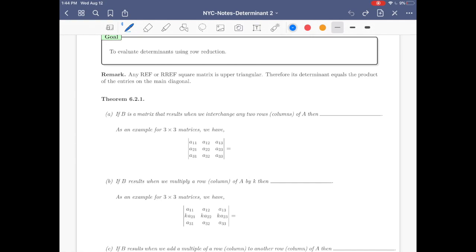Theorem 6.2.1 Part A: If B is a matrix that results when we interchange any two rows or columns of A, then the determinant of B equals minus the determinant of A. Let's look at an example.